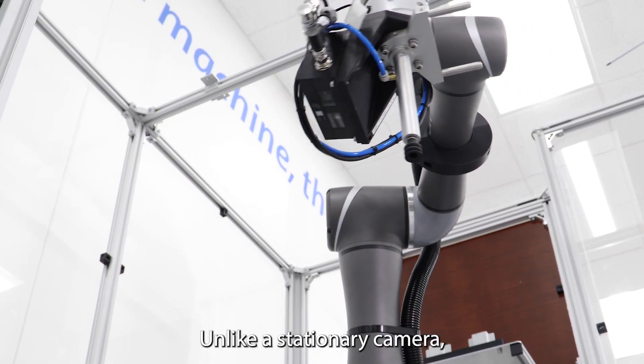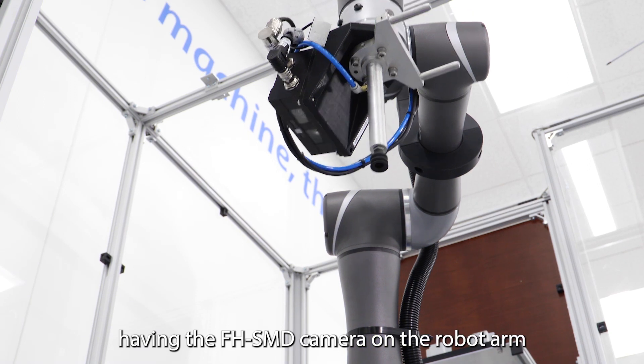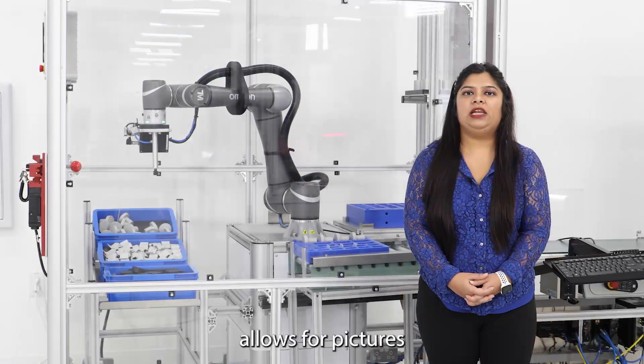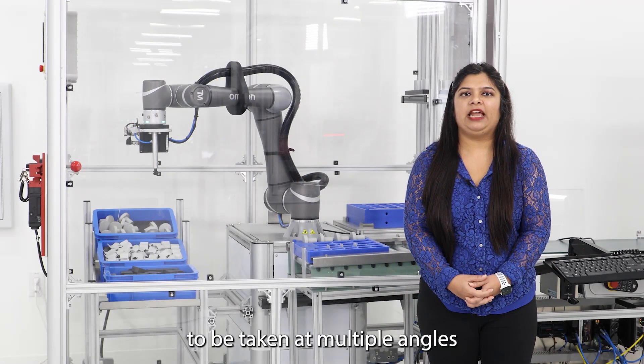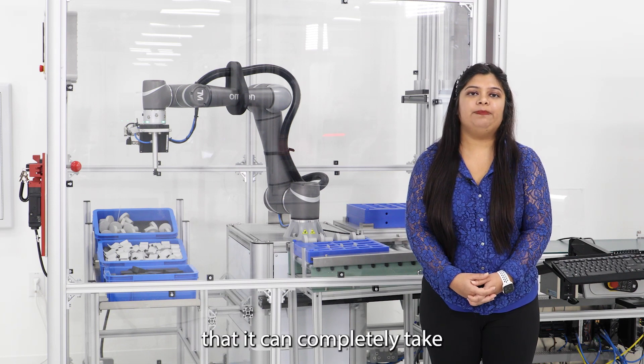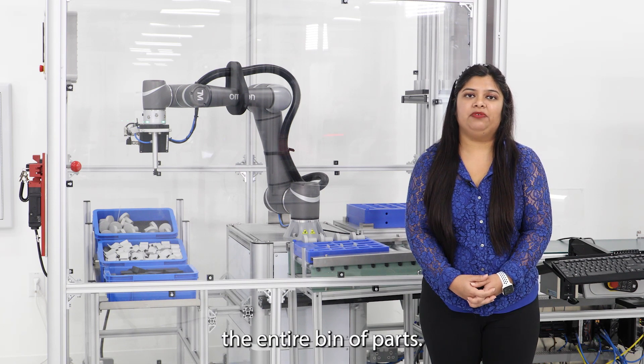Unlike a stationary camera, having the AFH SMD camera on the robot arm allows for pictures to be taken at multiple angles and ensures that it can completely pick the entire bin of parts.